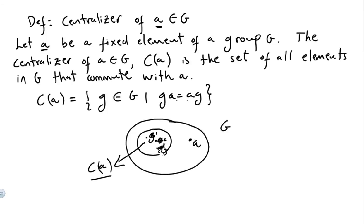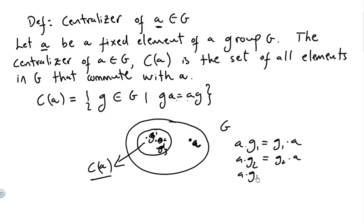To make this concrete: you have a group with element a, and elements g1, g2, g3. If a times g1 equals g1 times a, and a times g2 equals g2 times a, and a times g3 equals g3 times a, then g1, g2, g3 all commute with a.